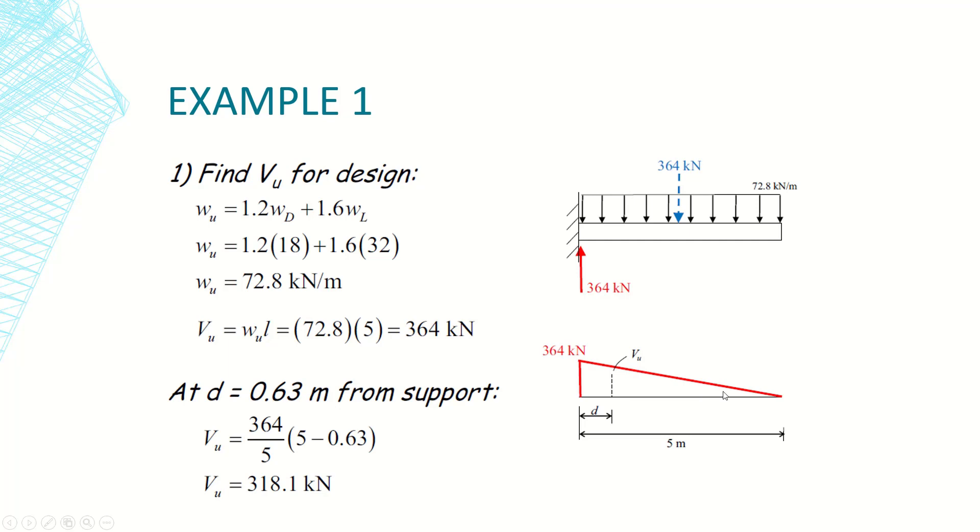d is the effective depth and we previously mentioned that d is equal to 630 millimeters. By drawing the shear diagram and using the similarity of these two triangles, we can determine the value of v ultimate as follows: 364 over 5 times (5 minus 0.63) which is d. So the required value for the design in our case is equal to 318.1 kN, not 364.